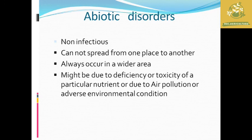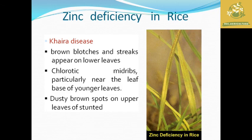After that we are going to see abiotic diseases, or disorders, because they are not infectious and cannot spread from one place to another. These are mainly caused by absence of nutrients, nutrient deficiency, or excess nutrients causing toxicity, as well as pollution and adverse environmental conditions. For example, Khaira disease is mainly caused by zinc deficiency in rice, with symptoms of brown blotches, streaks on lower leaves, and chlorotic midribs near younger leaves.